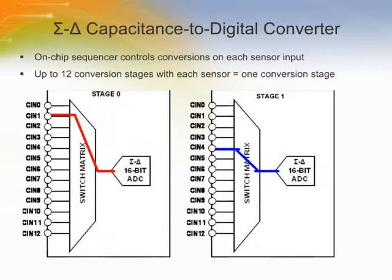Up to 12 conversion stages can be performed in one sequence. Each of the 12 conversion stages can measure the input from a different sensor. Depending on the number and type of capacitance sensors used, not all conversion stages are required. For example, a button sensor generally requires one sequencer stage and a wheel sensor requires eight stages, one for each segment of the wheel. The AD7147 converts on stage 0, then goes on to stage 1, stage 2, etc., and stores the results of each conversion in the CDC results register.